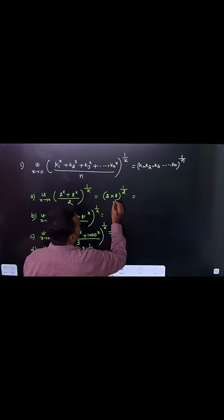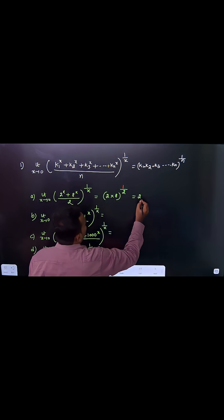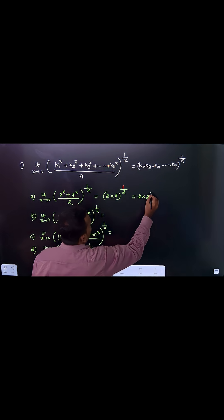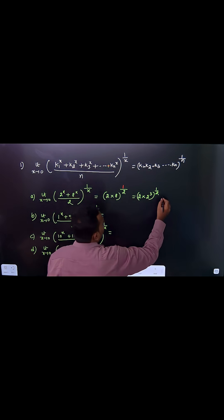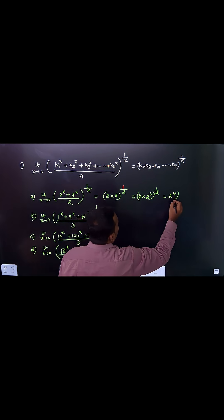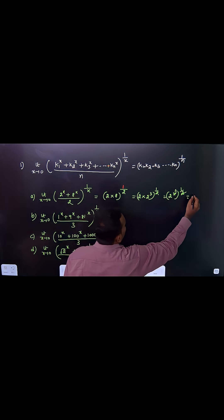So 2 times 8... we can write this as 2 times 2^3, raised to the power 1/2. We can write 8 as 2^3. This is 2^4 raised to the power 1/2, so the exponents give us 2^2, that is 4.